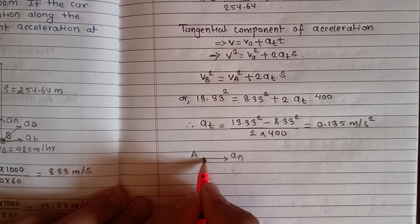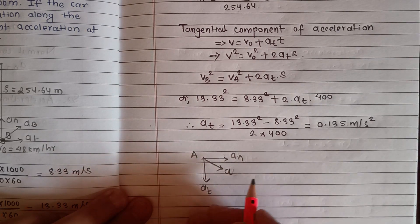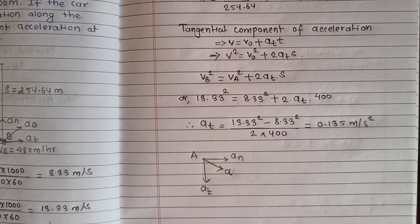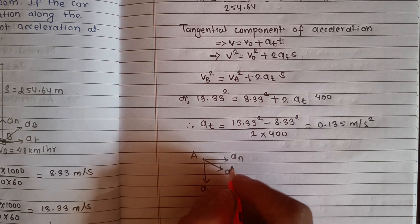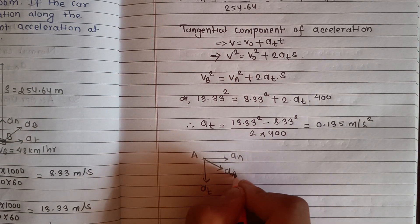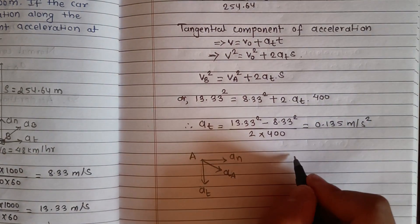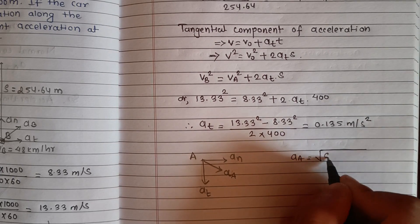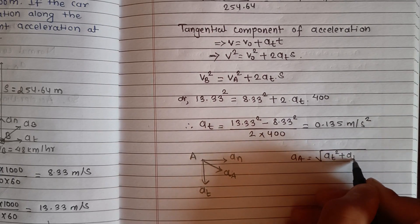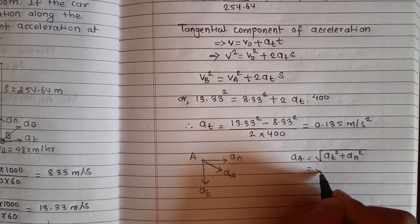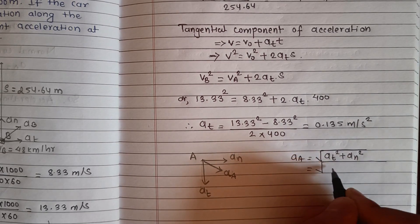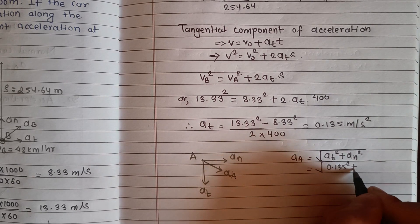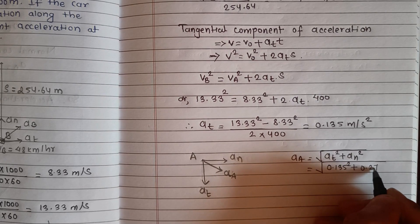Now the resultant acceleration at point A. Result mein acceleration nikaalke: aA = √(at² + an²) = √((0.135)² + (0.272)²). This gives the resultant acceleration at point A.